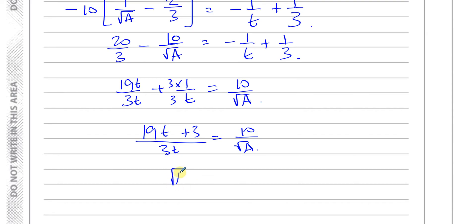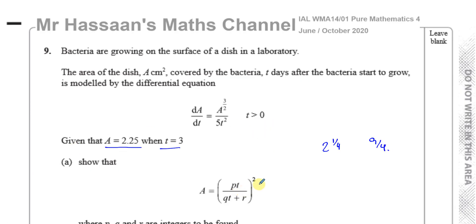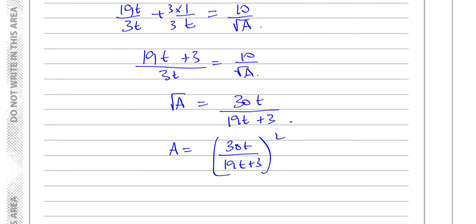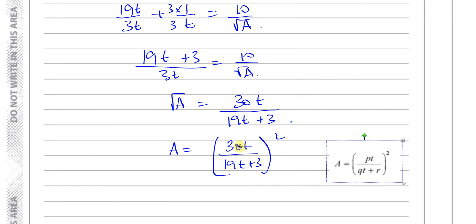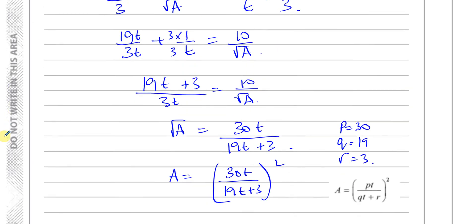Cross-multiplying and making A the subject: √A = 30t / (19t + 3). Finally, squaring both sides: A = (30t / (19t + 3))², which is exactly the required form. So we can say p = 30, q = 19, and r = 3. The integers all turned out correctly — that's the answer to part a.